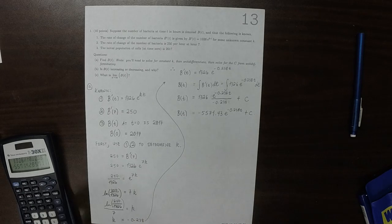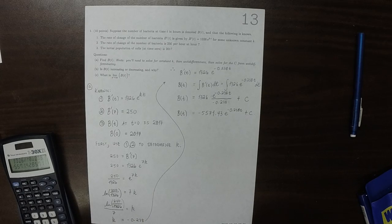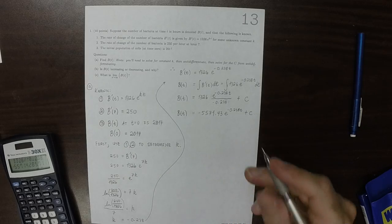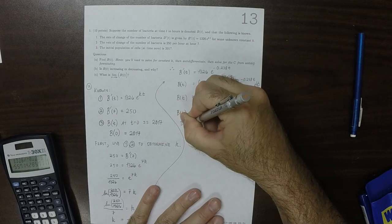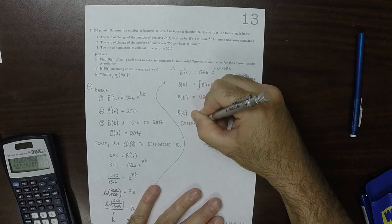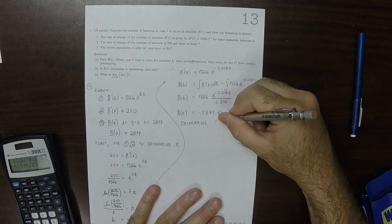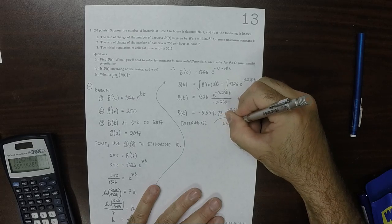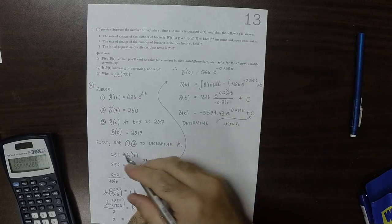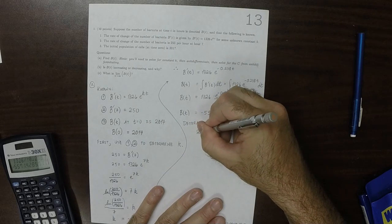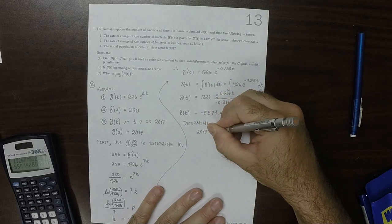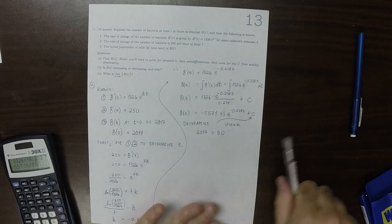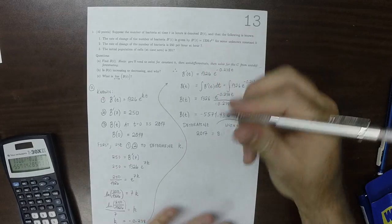So now we almost know B, but what we don't know yet is the value of c. So now we're going to determine c, and we're going to do that using the fact that we're supposed to get 2017 when you plug in 0.